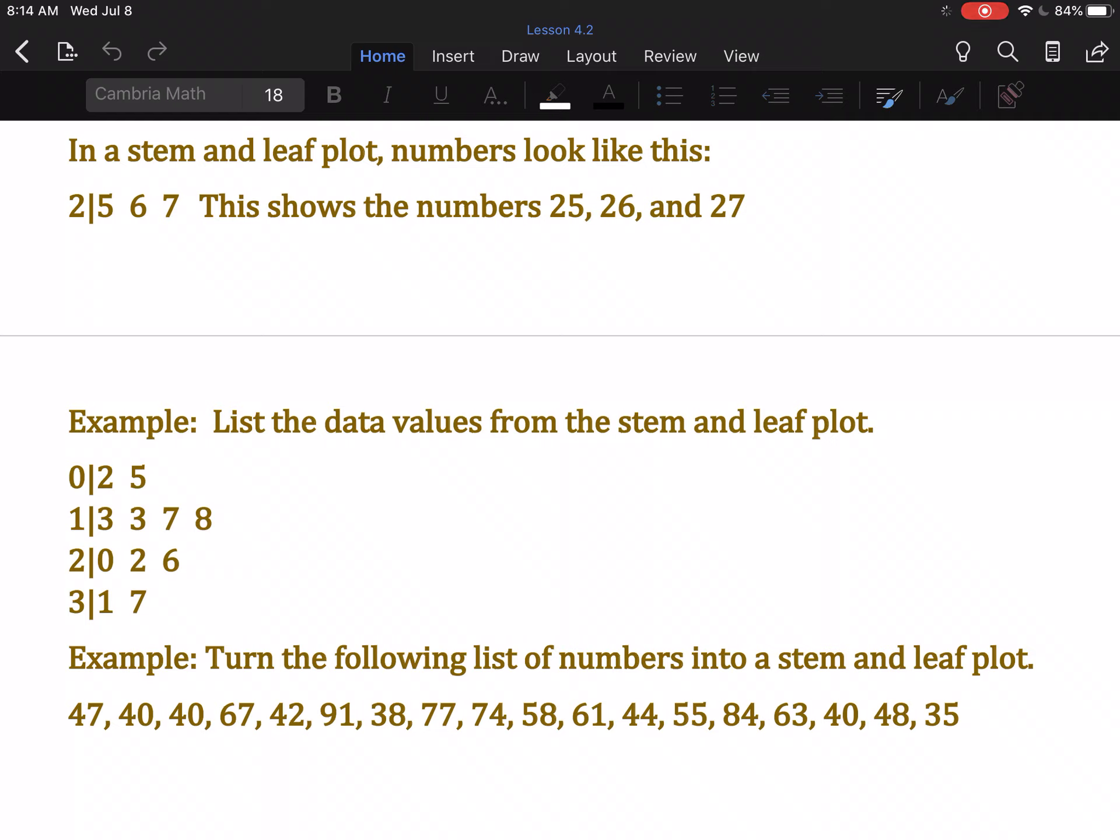So list the data values from this stem and leaf plot. Well, 0, 2 is the number 2. 0, 5 is the number 5. 1, 3 is 13, and there are two of those.